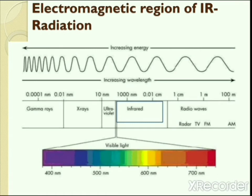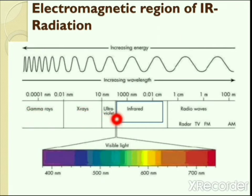In this picture you can see different regions of the electromagnetic radiation. These regions are gamma rays, X-rays, ultraviolet, infrared, and radio waves. The region of importance here is infrared.